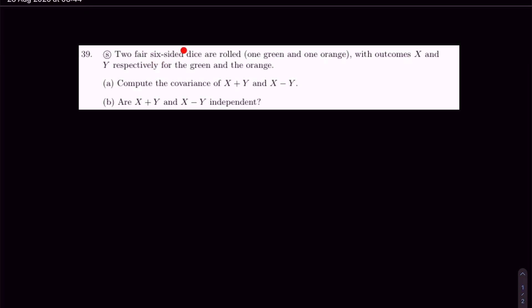Two fair six-sided dice are rolled, one green and one orange, with outcomes X and Y. We are asked to compute the covariance of the sum and the subtraction of those two random variables. Let's start by computing the covariance.